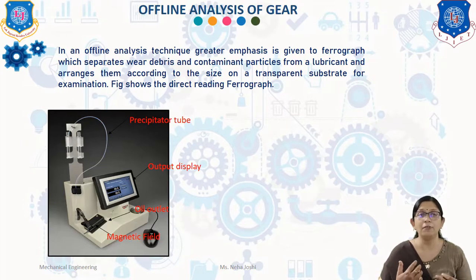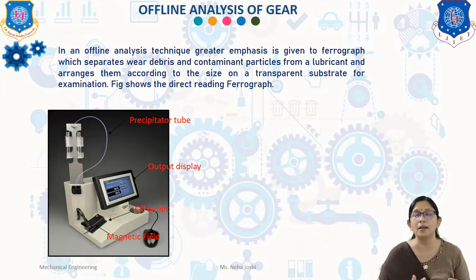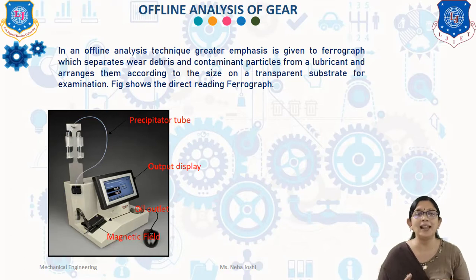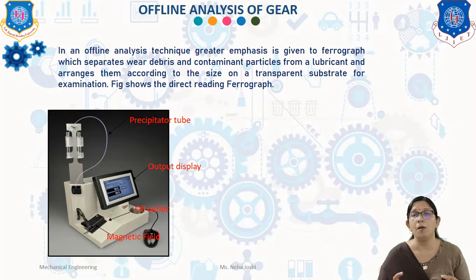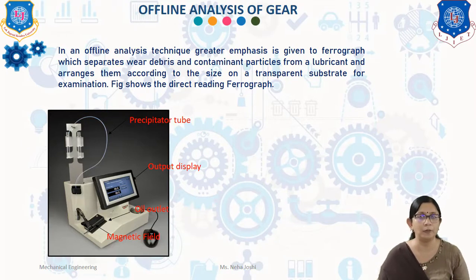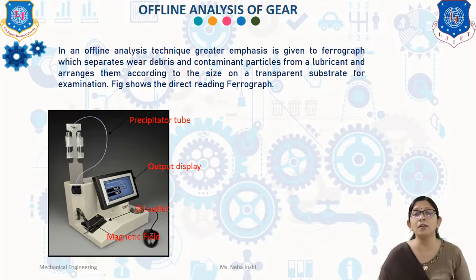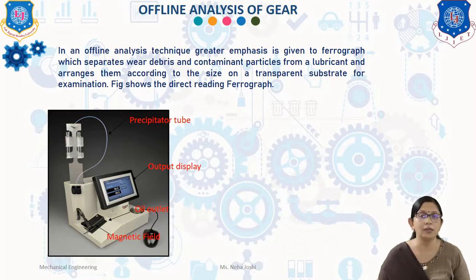Direct reading ferrograph is a quantitative analysis of ferrous particles present in used oil. It is used to separate larger particles, generally greater than 5 micrometers, and smaller particles less than 5 micrometers, and to measure the size of ferrous particles present in the oil sample. The numbers obtained do not relate to any other number such as ppm (parts per million).